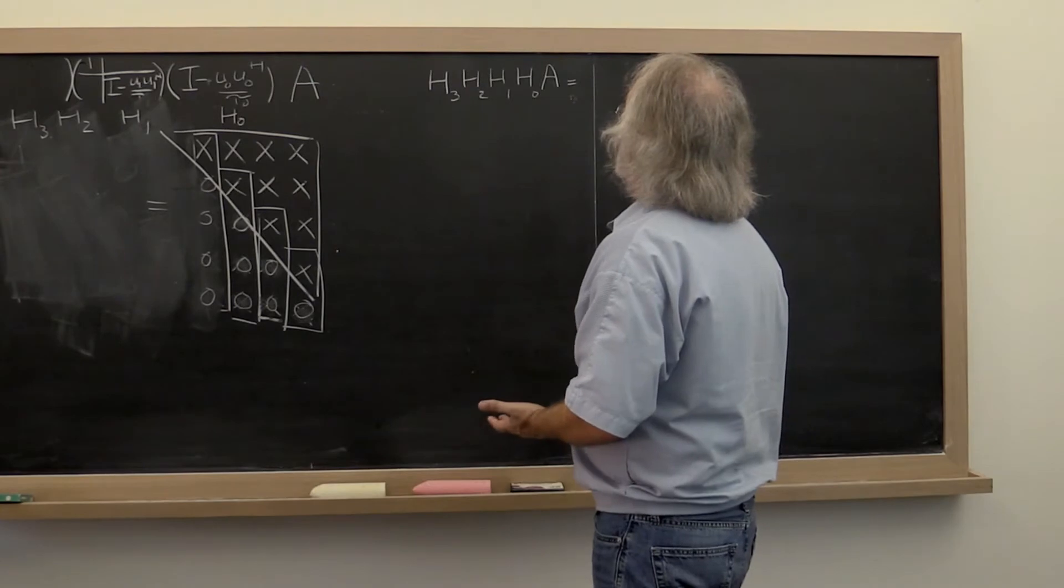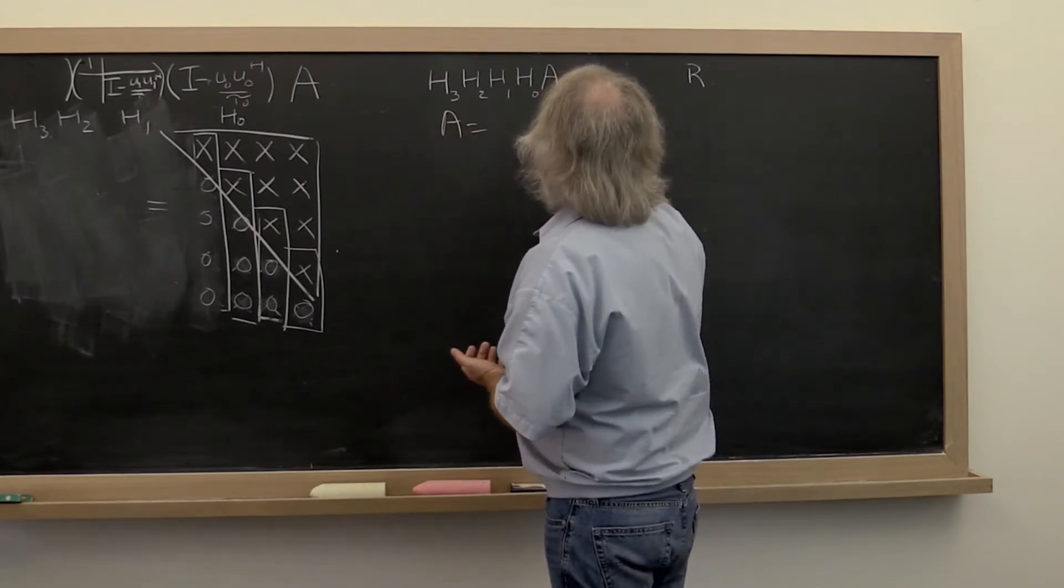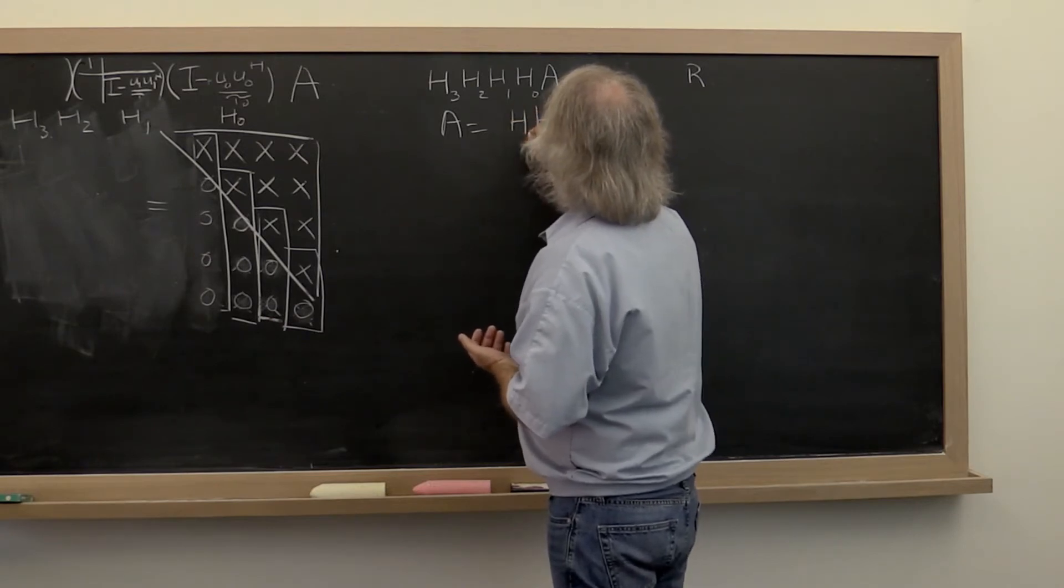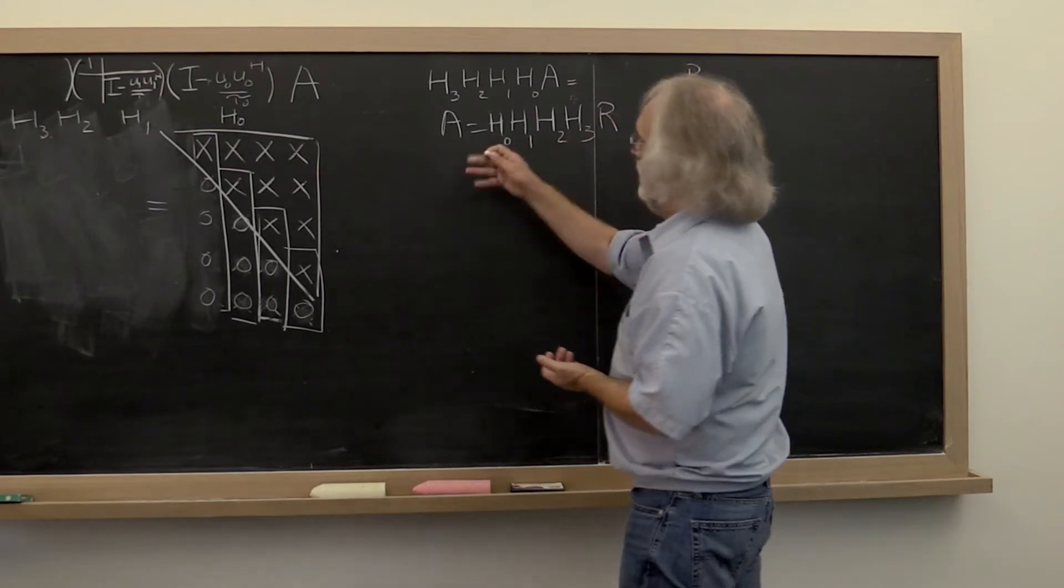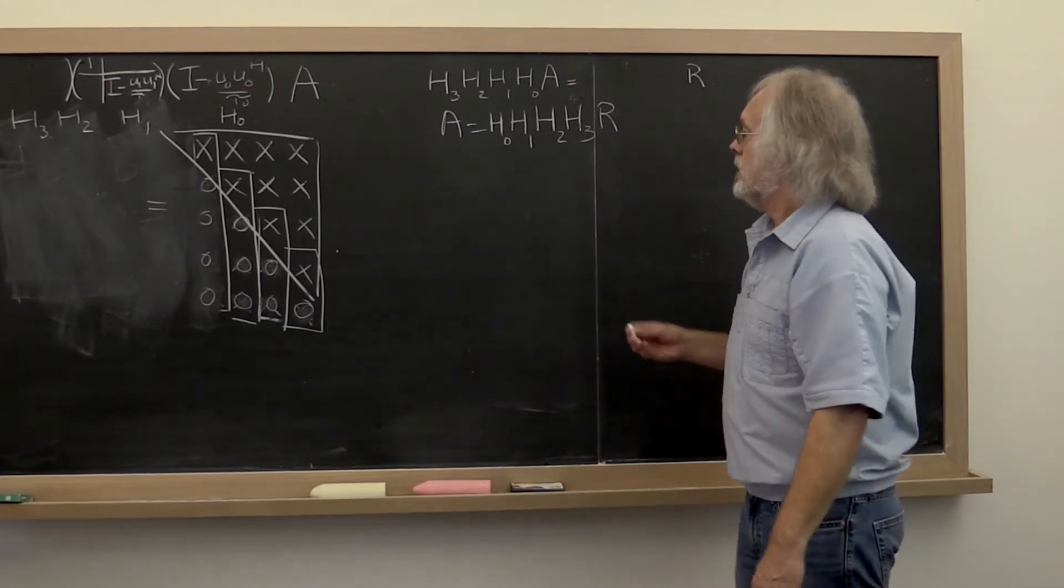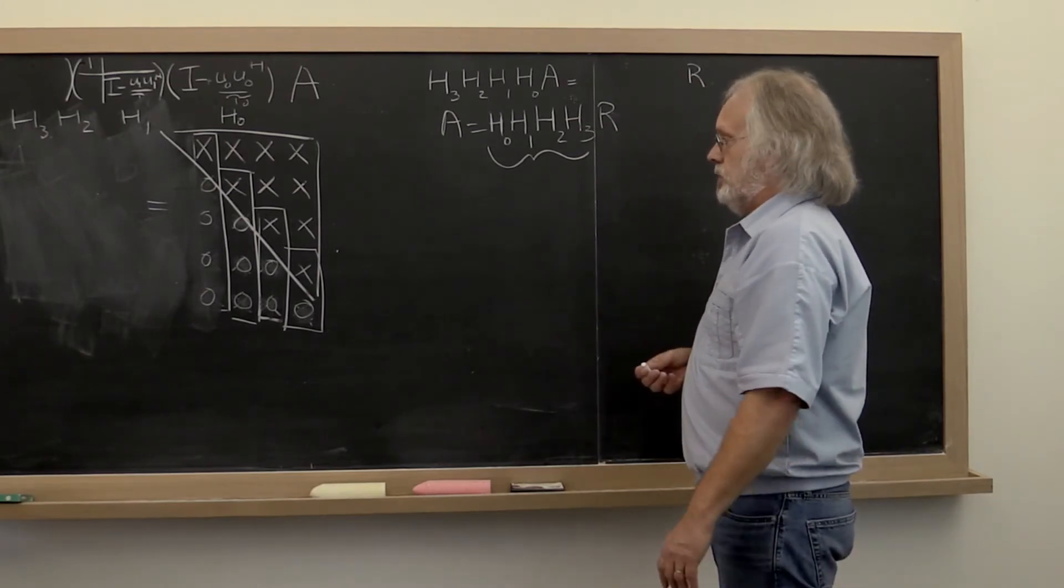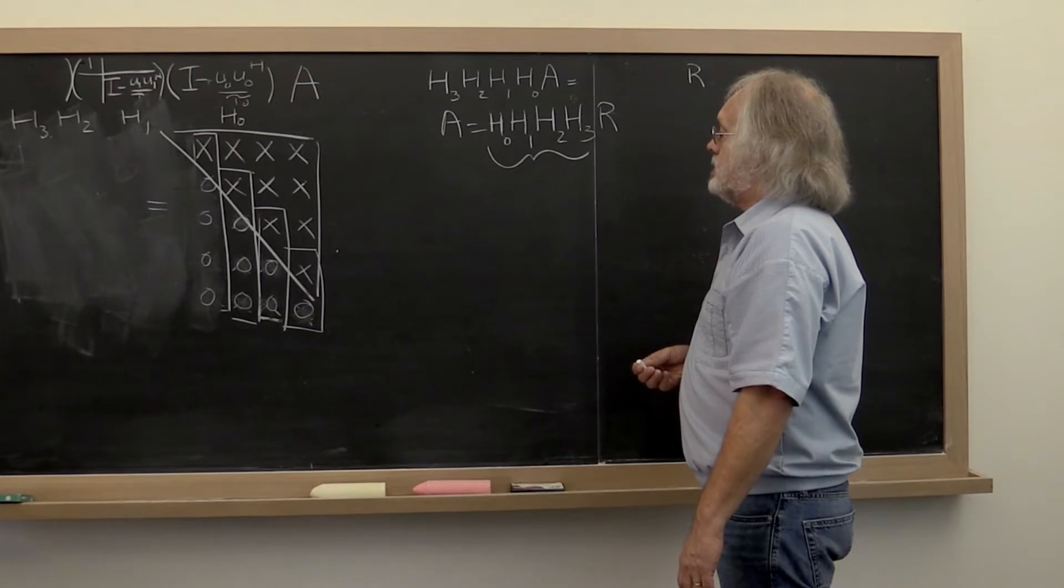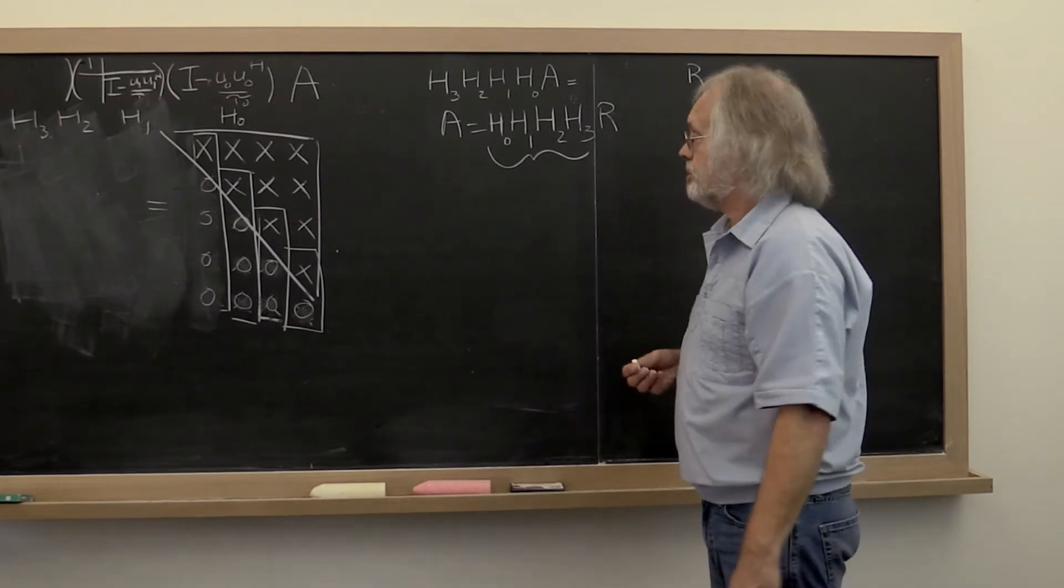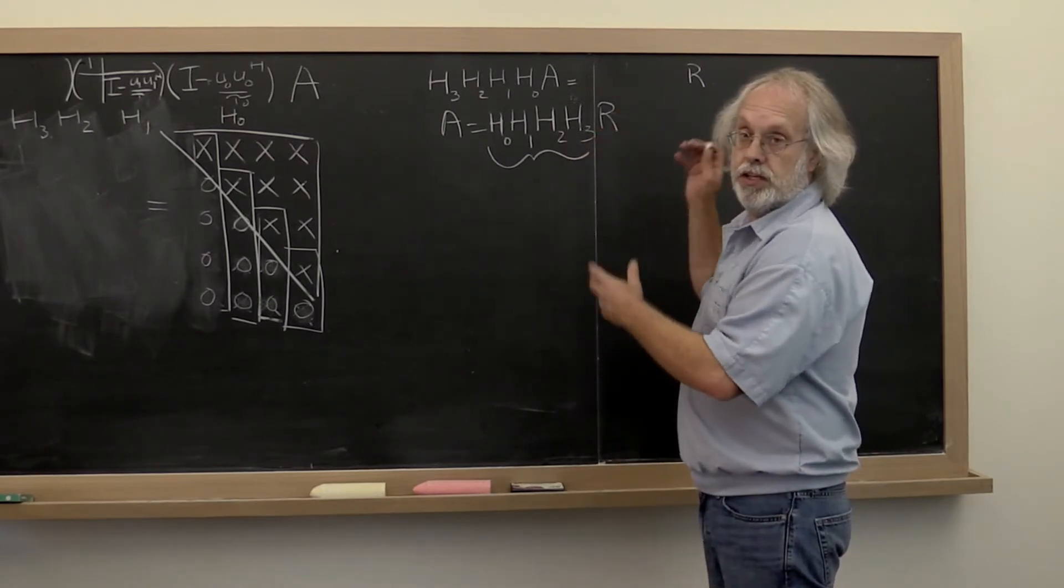What we can do is rewrite this as A equals R times H3 times H2 times H1 times H0, where obviously if our matrix had more columns we would have more such matrices. If we multiply all of these together, then we end up with a unitary matrix and something that starts looking like a QR factorization. The only catch being that Q is now a square matrix and R may have more rows than it has columns.